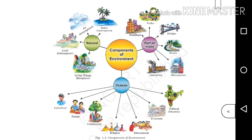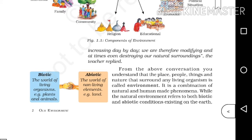Let's look at the figure showing the components of environment. They are divided into three: natural, human-made, and human. The natural components include water, air, land, and living things. Human-made components include buildings, parks, bridges, roads, monuments, and industries. The human component includes individual, family, community, religion, educational, economic, and political situations. These are the three classified components of environment.